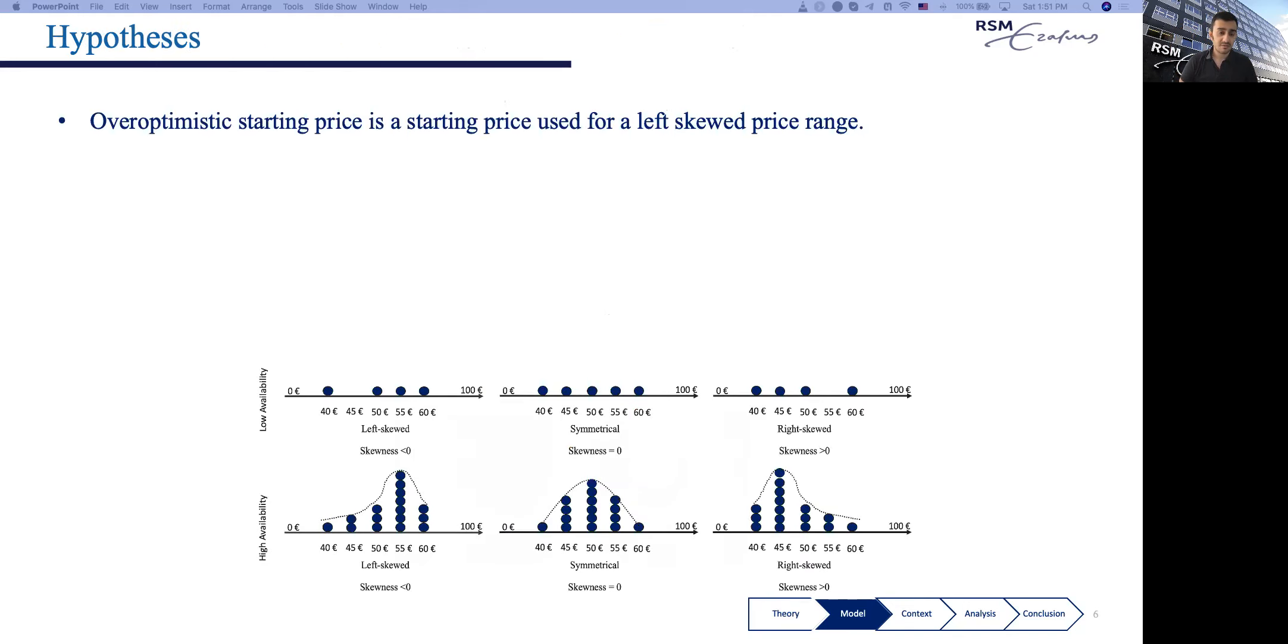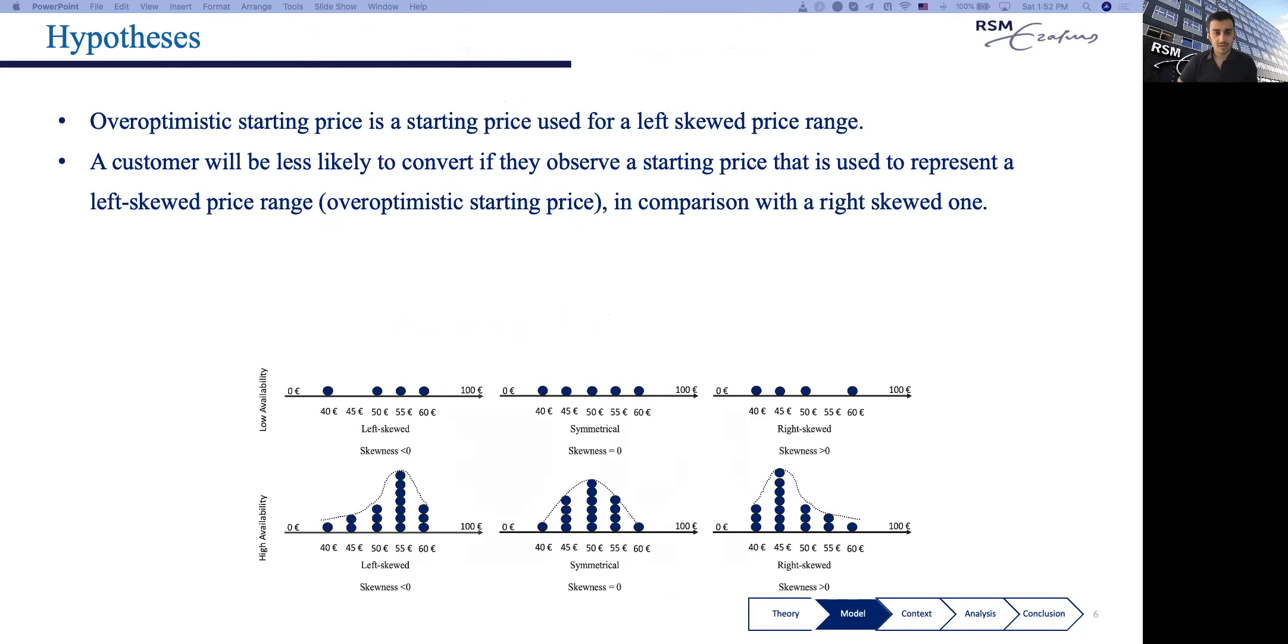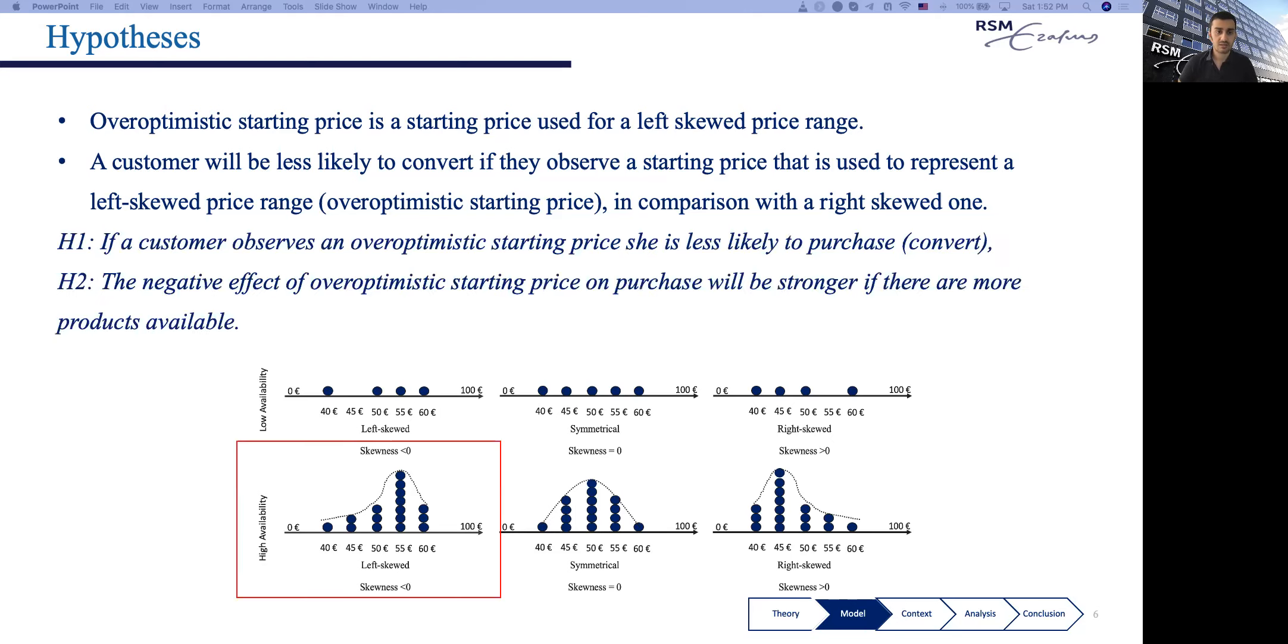Let's look at our hypotheses. We define an overoptimistic starting price as a starting price used for a left-skewed price range. A customer will be less likely to convert if they observe a starting price used to represent a left-skewed price range, in comparison with a right-skewed one. So these translate to the following hypotheses: If a customer observes an overoptimistic starting price, they are less likely to purchase or convert. This negative effect is exacerbated when there are more products available. In a nutshell, if we have different distributions of prices in a range, the bottom left figure shows when starting prices can trigger overoptimism.